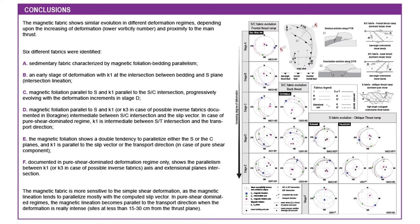Basically, we start with the sedimentary fabric when we are far from the thrust. Then there is the evolution of the magnetic lineation first and the magnetic foliation later. The magnetic lineation first forms at the S-C intersection and then tends to progressively align with the slip vector. The magnetic foliation has a double tendency to parallelize to pressure solution cleavage and shear planes.